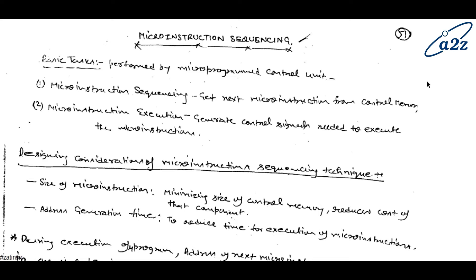Now what is the significance of sequencing? It is not possible that you execute only one instruction at a time. There may be a possibility of a sequence of instructions — multiple instructions may be there: two, three, five, twenty, twenty-five, any number of instructions. So there must be sequencing between the instructions — which instruction is going to execute first, then which will be second, and so on. That phenomenon is known as micro instruction sequencing.